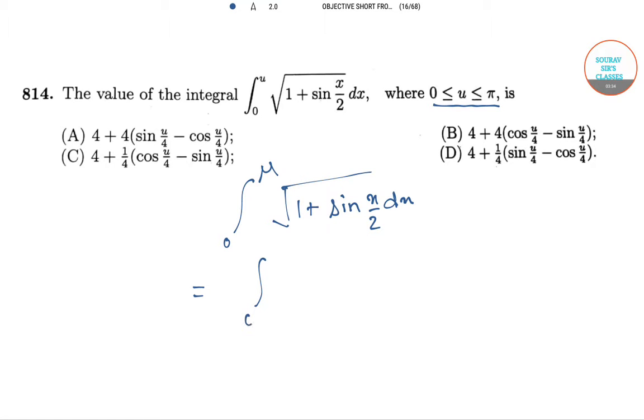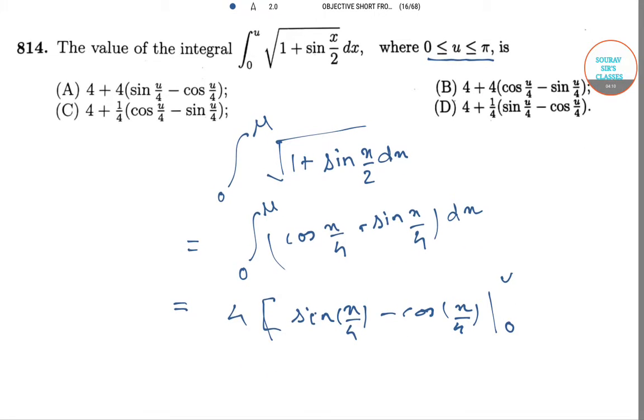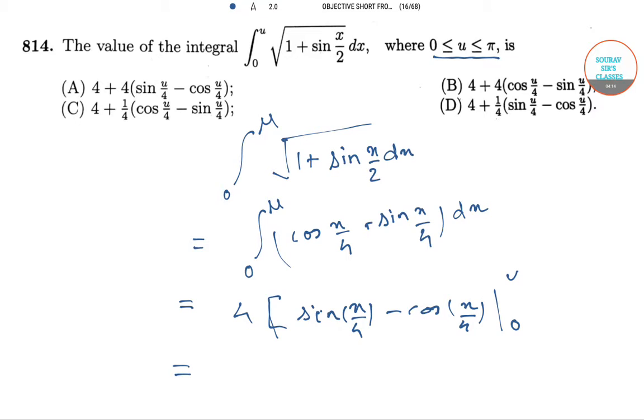This is equal to integration 0 to u (cos(x/4) + sin(x/4)) dx, which equals 4[sin(x/4) - cos(x/4)] from 0 to u.